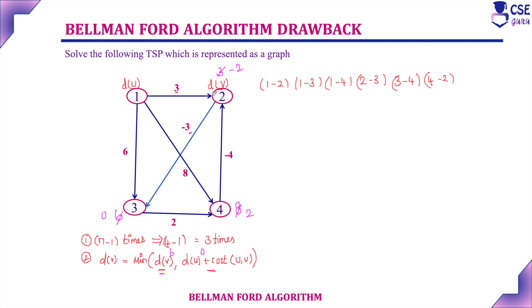Second time relaxing: 1 to 2, distance is 3 — already minus 2, so minus 2 is minimum. 1 to 3, distance is 6 — already 0 is minimum. 1 to 4, cost is 8 — already 2 is minimum. 2 to 3 — it is minus 2 minus 3, giving minus 5. Minus 5 is less than 0, so consider minus 5. 3 to 4 — it is minus 5 plus 2, giving minus 3. And 4 to 2 — it is minus 3 minus 4, giving minus 7. We have completed second time relaxing the edges.